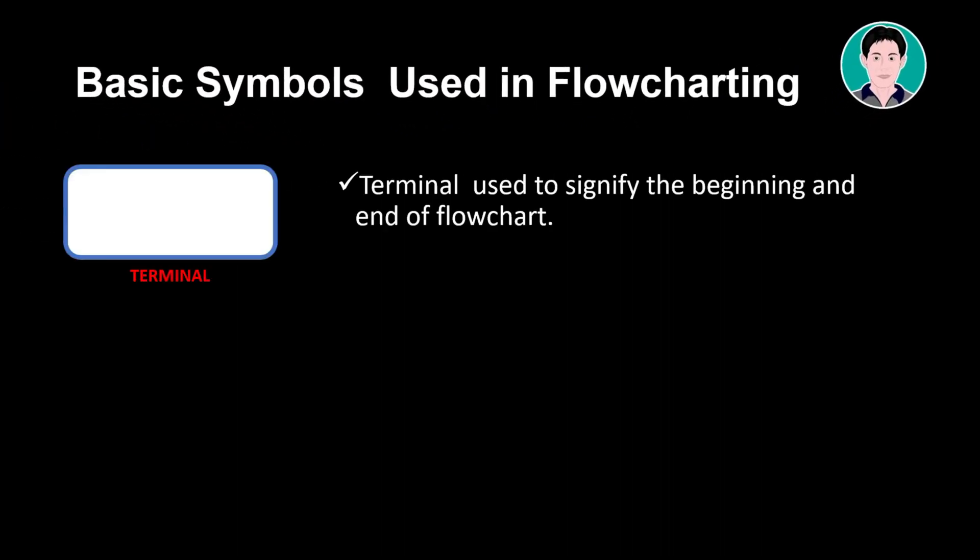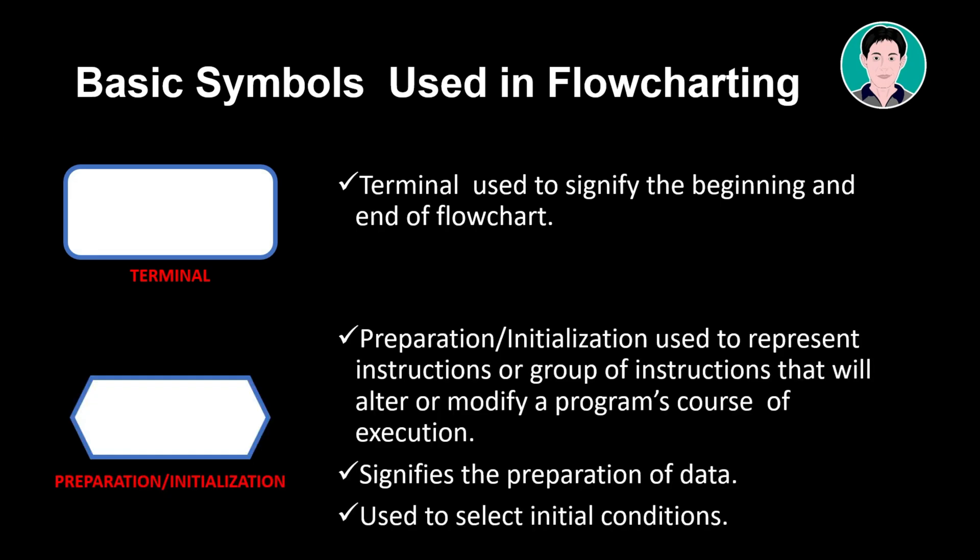Basic symbols used in flowcharting. Terminal used to signify the beginning and end of flowchart. Preparation/initialization used to represent instructions or group of instructions that will alter or modify a program's course of execution. Signifies the preparation of data. Used to select initial conditions.